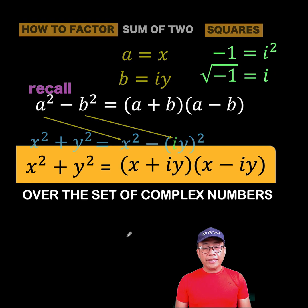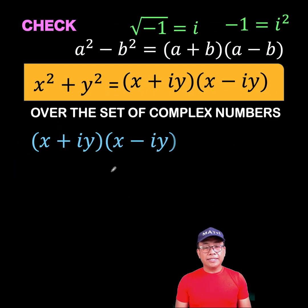Now, to check if this is correct, we can perform the multiplication. So multiply the quantity x plus i y times the quantity x minus i y. So applying the FOIL method,